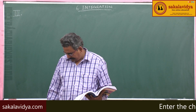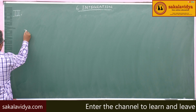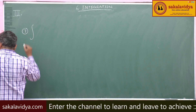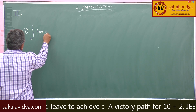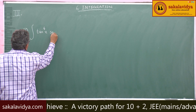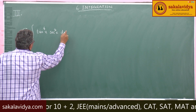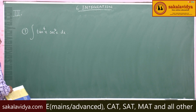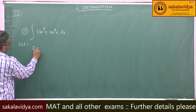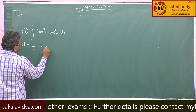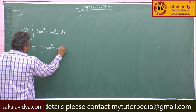Next problem follows. Seventh one: evaluate integral of tan x to the power of 4 into secant square x dx. Let us say I is equal to integral tan x to the power of 4 secant square x dx.